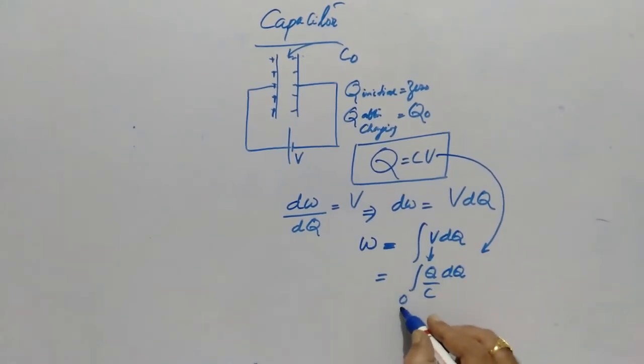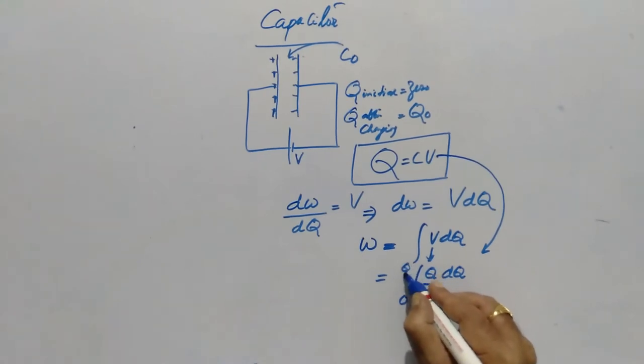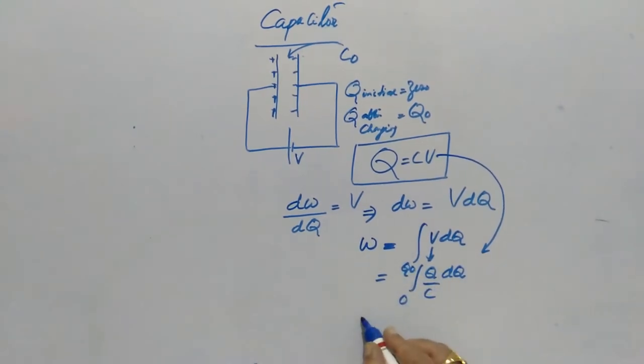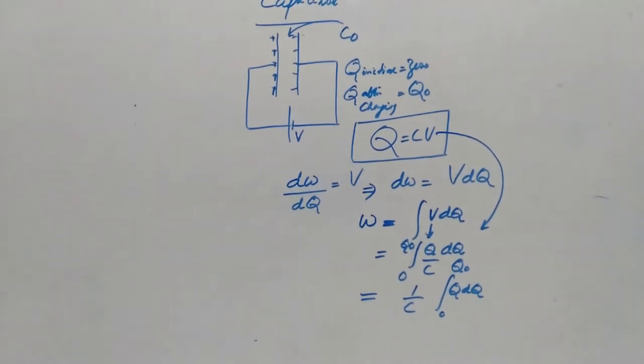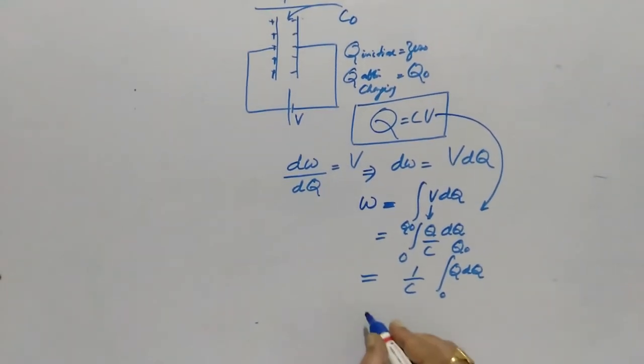dQ. Initially the Q is 0, finally the Q is Q₀. Then I can take out this C and I'll get inside Q dQ. We know the formula: x^n dx is x^(n+1)/(n+1). From that it can be written as Q²/2.